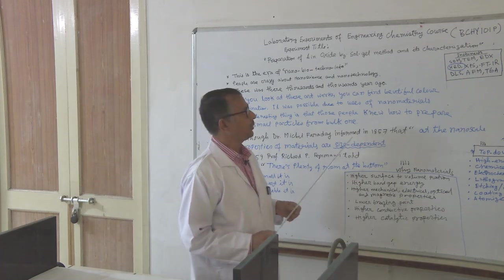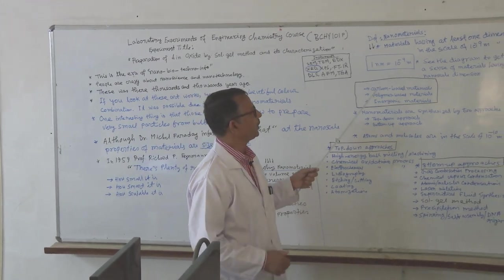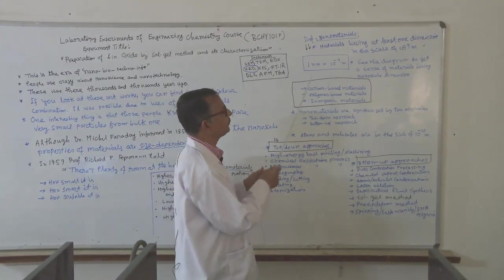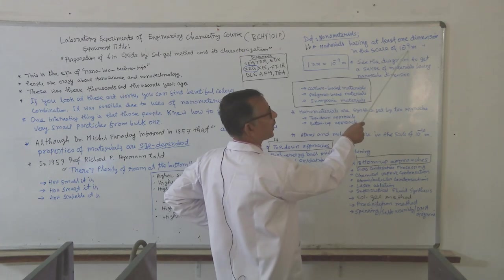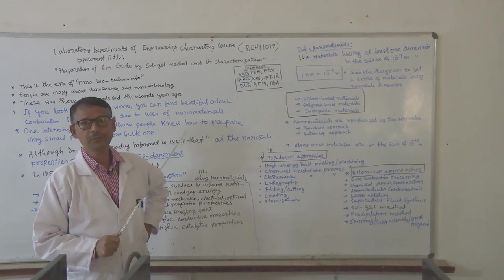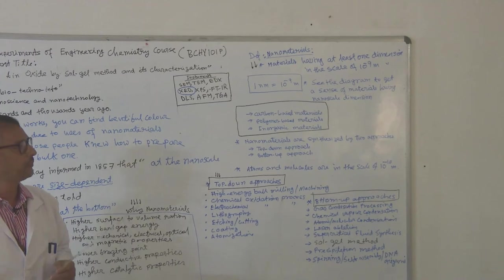Now we talk about nanomaterials. It means materials having at least one dimension in the scale of 10 to the minus 9 meters. That means 1 nanometer equal to 10 to the minus 9 meters. See the picture.